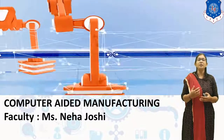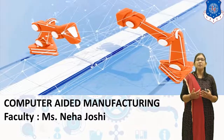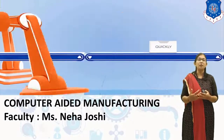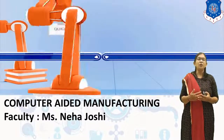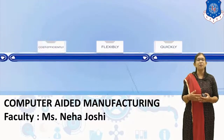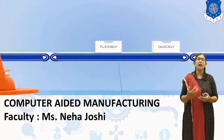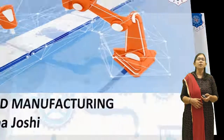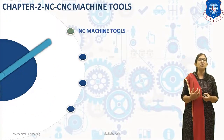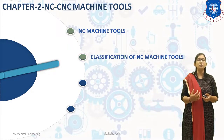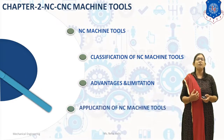Now let's start with our second chapter, that is NC/CNC Machine Tool. It is the most important chapter. In the previous session we covered our 7th chapter, that is Computer Integrated Production Management System, where we covered Material Requirement Planning, Manufacturing Resource Planning and Just-In-Time Philosophy. In today's session we will cover what is NC/CNC tool, classification of NC/CNC tools, advantages and limitations of NC/CNC tools, and applications of NC/CNC tools.